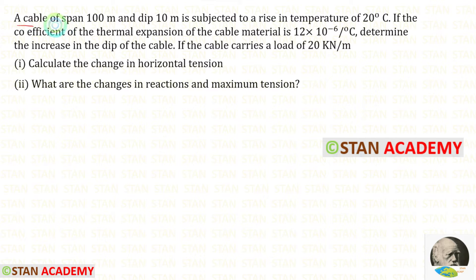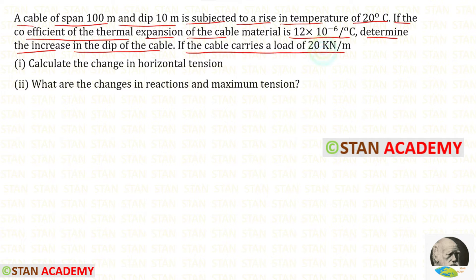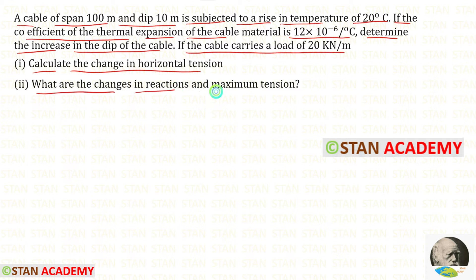A cable of span 100 meter and dip 10 meter is subjected to a rise in temperature of 20 degree Celsius. If the coefficient of thermal expansion of the cable is 12 into 10 power minus 6 per degree Celsius, determine the increase of the dip of the cable. If the cable carries a load of 20 kilo Newton per meter, calculate the change in horizontal tension. What are the changes in reactions and maximum tension?